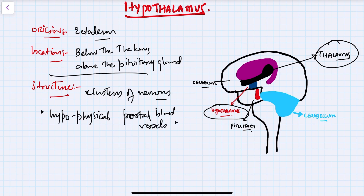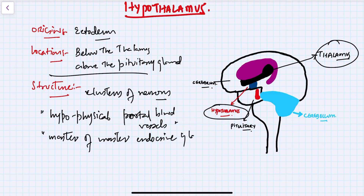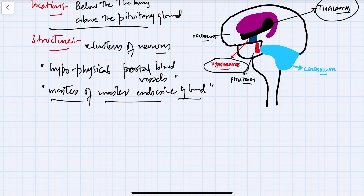It is important to note that the hypothalamus is also called the master of master endocrine gland. As shown in the figure, the hypothalamus is connected via the hypophysical portal blood vessels, and since it controls the pituitary gland as well, that's why it is called the master of master endocrine gland.